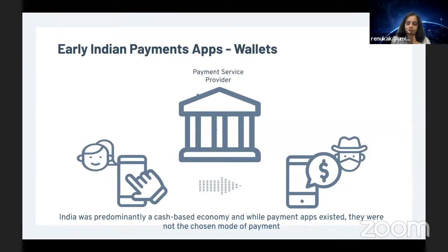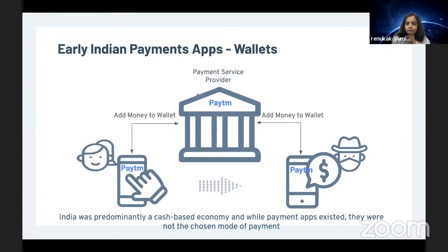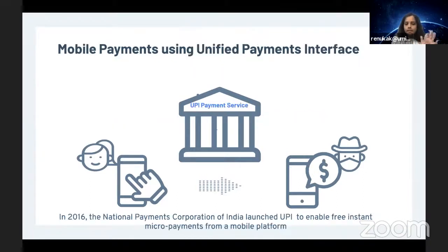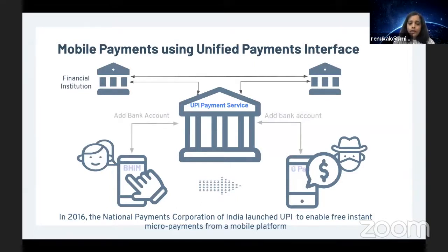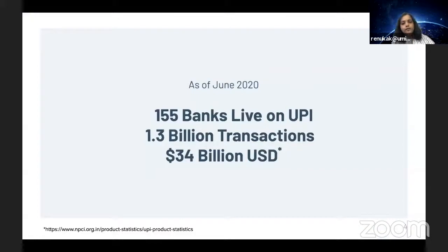India was predominantly a cash-based economy. Early Indian payment apps were digital wallets, meaning two users wanting to transact had to install the exact same app, add money to the wallet, and the payment service provider would do a wallet-to-wallet transaction, sometimes for a nominal fee. This was the story until 2016, when the National Payments Corporation of India (NPCI) launched the Unified Payments Interface to facilitate free and instant micro-payments from a mobile platform. As of June 2020, there are 155 banks live on UPI, carrying out 1.3 billion transactions worth 34 billion US dollars.